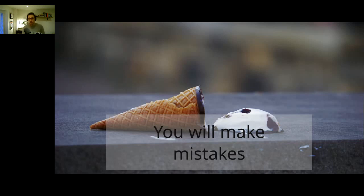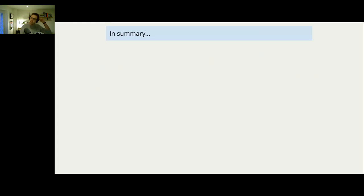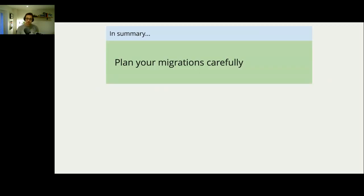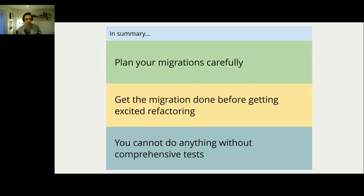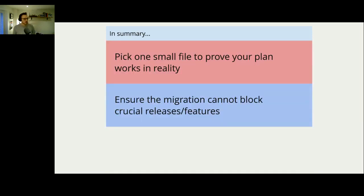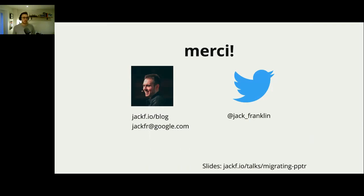So in summary, the top-level learnings from doing this work: Plan your migrations carefully. Get the migration done before getting excited about refactoring — it's more important to get the migration done because that's the biggest disruption to the codebase and to your workflow. Get everything migrated and then start to take advantage. You cannot do anything without tests — you need tests if you're going to embark on work like this. Pick one small file to prove your plan works in reality, because it's very easy to have an issue pop up that you didn't expect. Ensure the migration cannot block crucial releases or features — if you're halfway through and have a critical bug to fix, does the migration prevent that? And embrace the mistakes — use them to improve your setup and make sure those bugs can't slip through again.